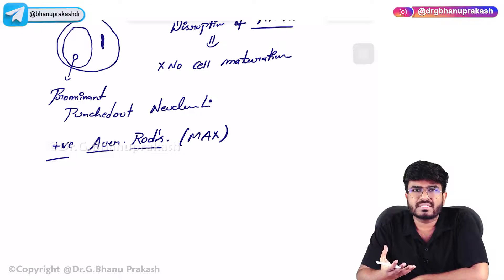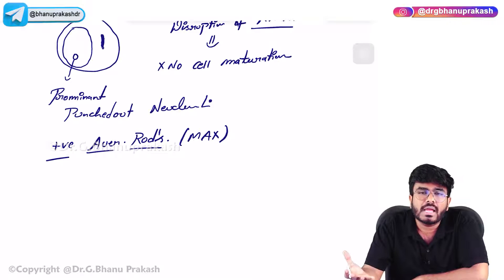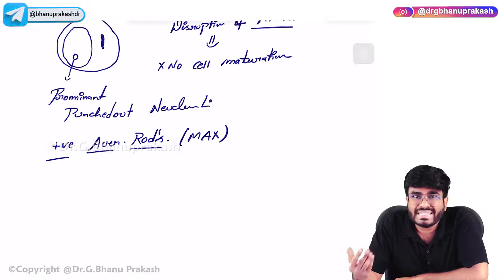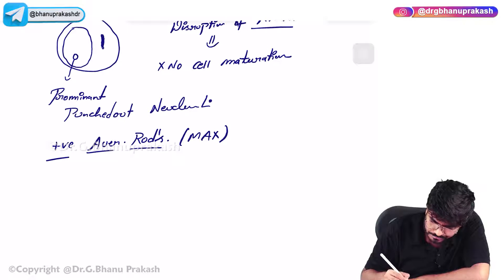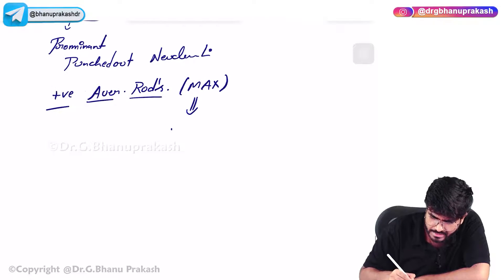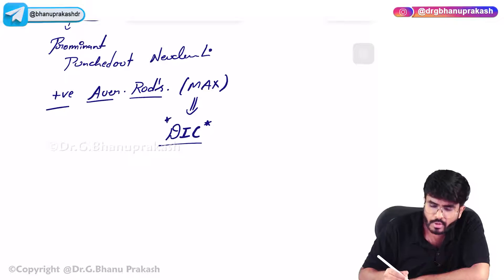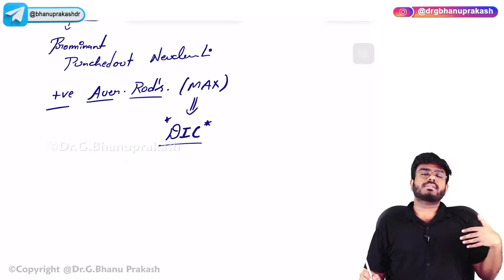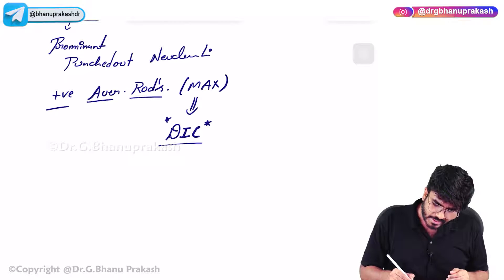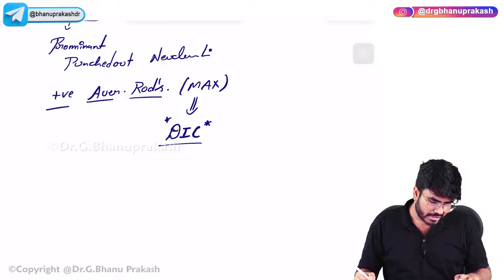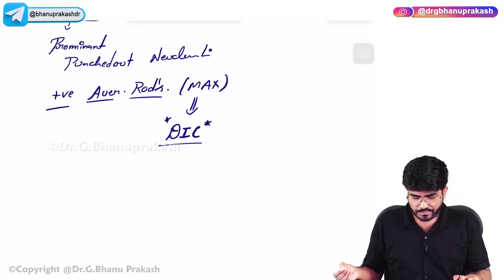These immature cells are very fragile in circulation. They are going to get ruptured, and the Auer rods - the myeloperoxidase - that leaks can activate the clotting process, which can lead to disseminated intravascular coagulation. The person having acute promyelocytic leukemia is at risk of getting DIC.